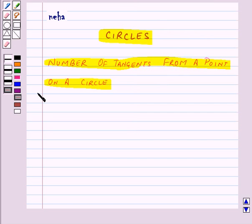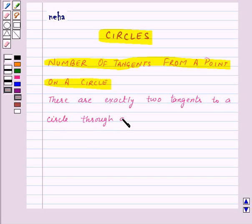So let us write: there are exactly two tangents to a circle through a point lying outside the circle.